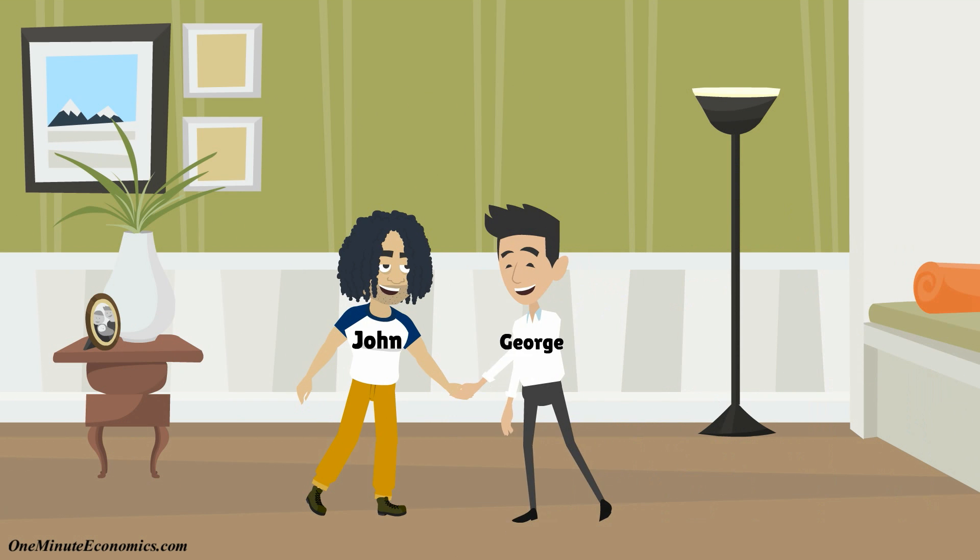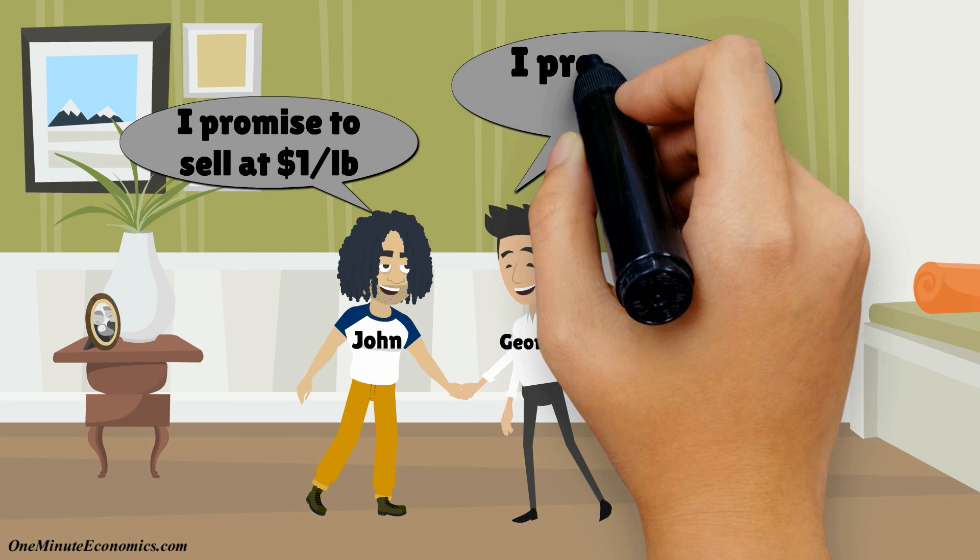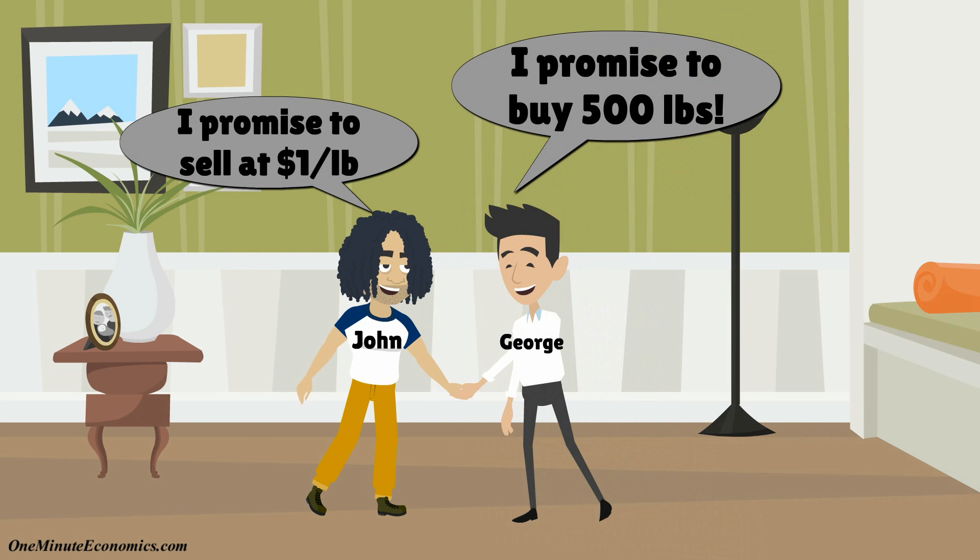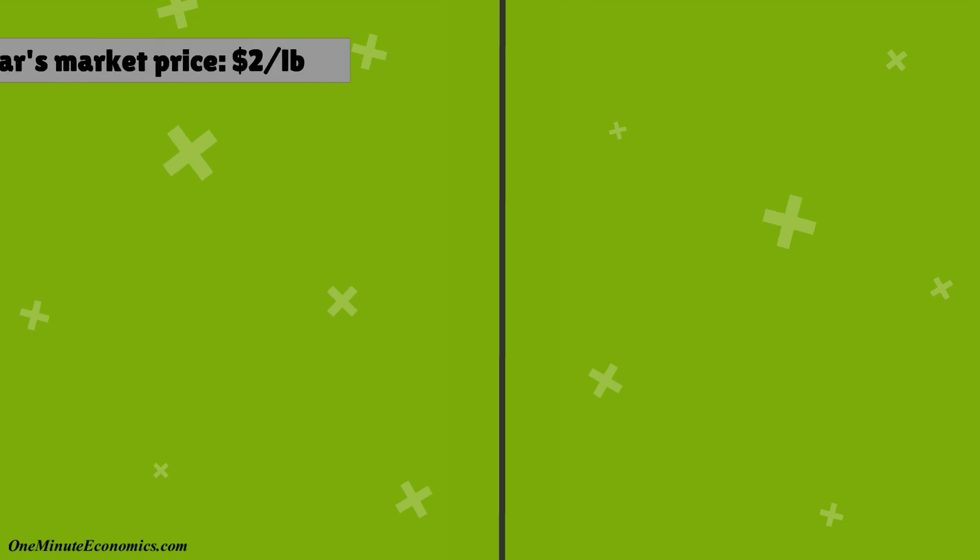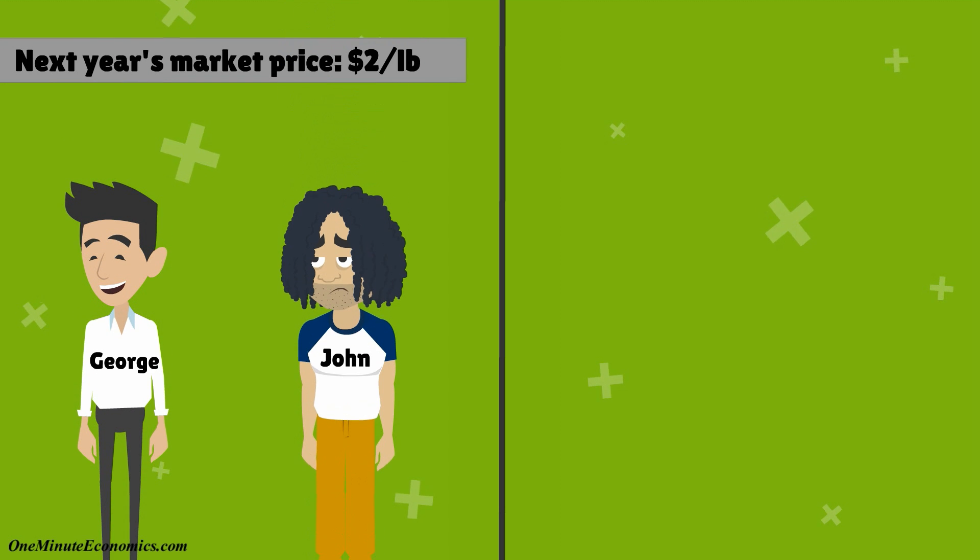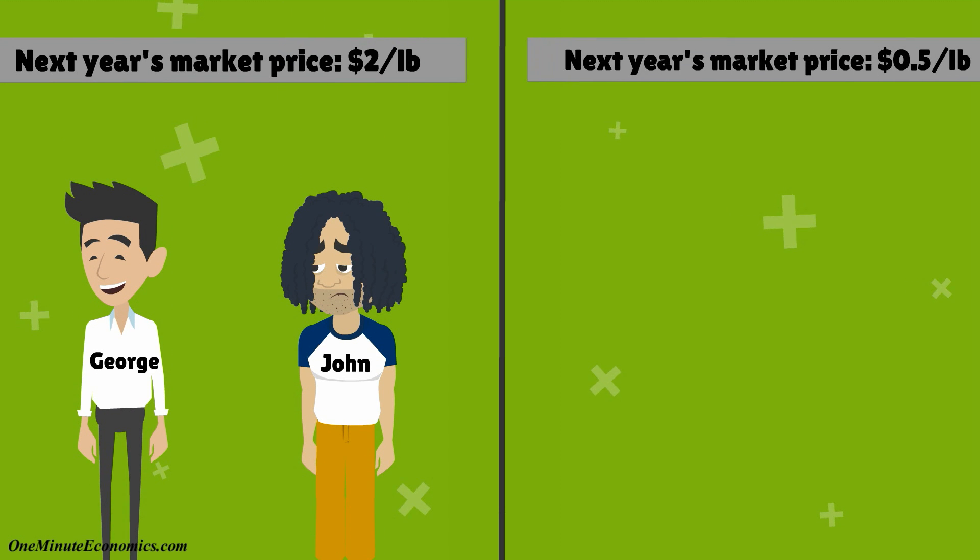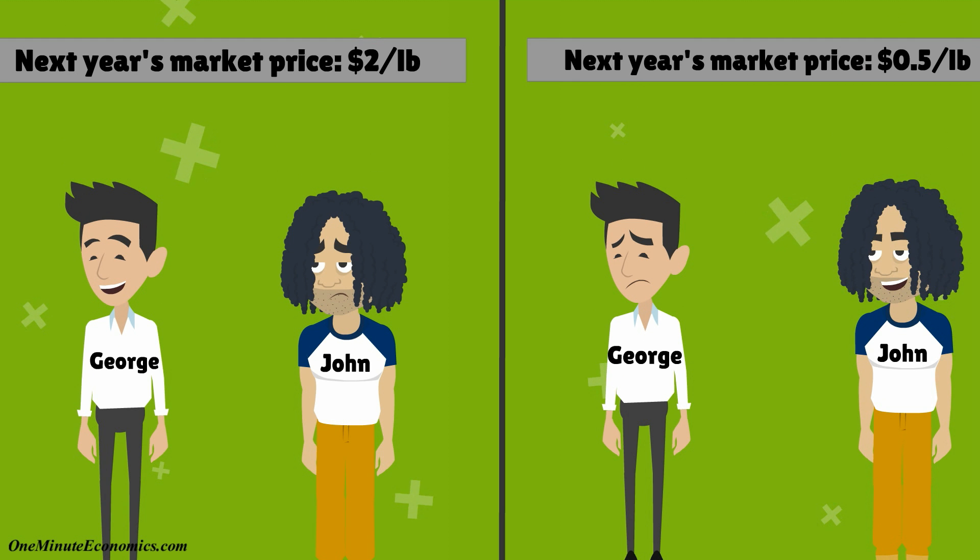So, regardless of what happens to the price of oranges, George promises John he'll buy at today's price of $1 per pound. If the price of oranges doubles next year, George will be very happy. If it drops by 50%, John will be happier instead.